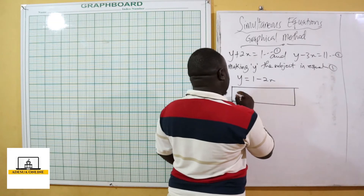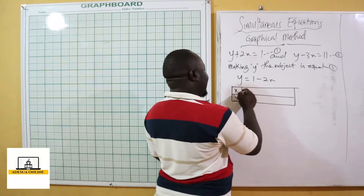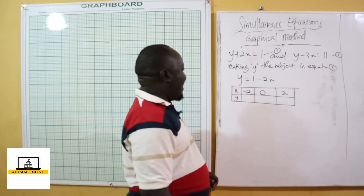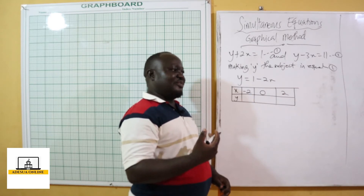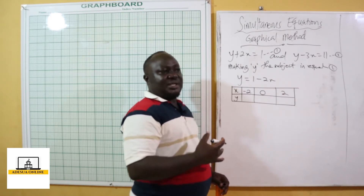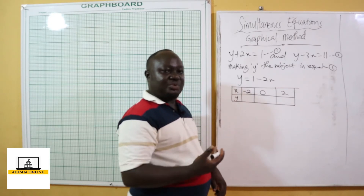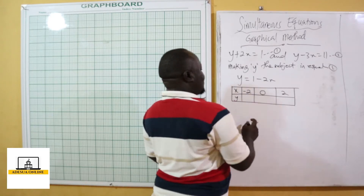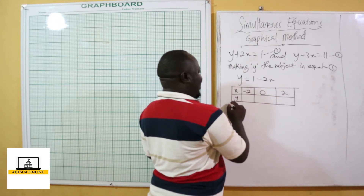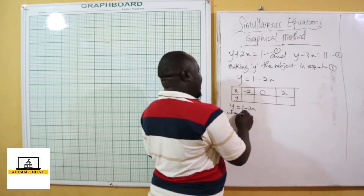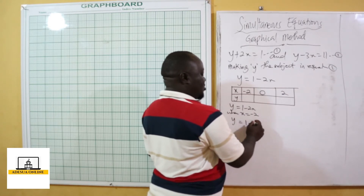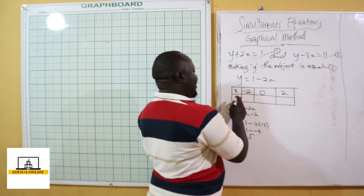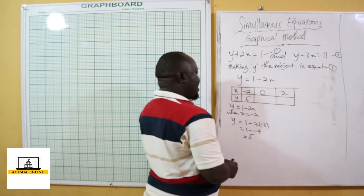I have my x and y table. I'll pick x values of negative 2, 0, and 2. When x equals negative 2, substituting into y equals 1 minus 2x: y equals 1 minus 2 times negative 2, which is 1 minus negative 4, giving positive 5. So when x is negative 2, y is 5.